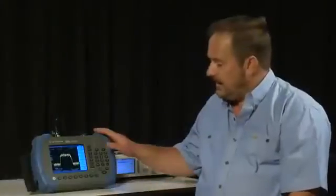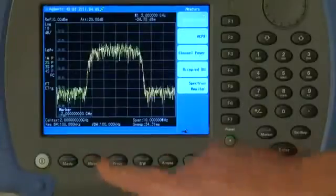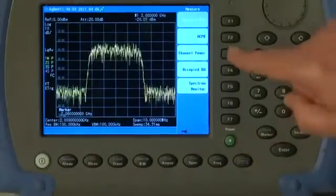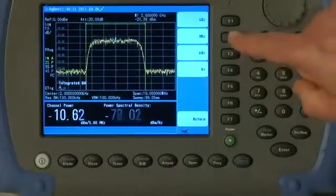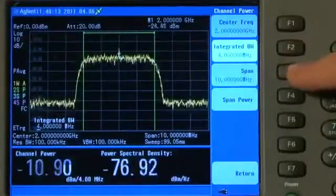Fortunately, these analyzers have a very useful feature built in for doing that. If I press the Meas key, and then Channel Power, and I will set the integration bandwidth to say 4 MHz, and the span is still set at 10 MHz.